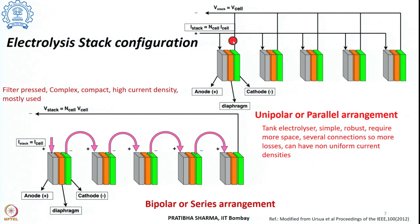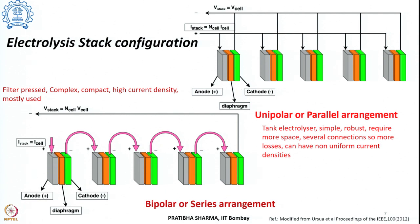In the unipolar or parallel arrangement, the current obtained is the number of cells times the current passing through an individual cell. The most widely used arrangement remains the series combination or bipolar arrangement.